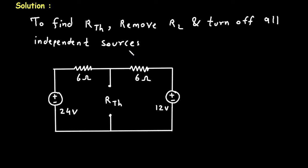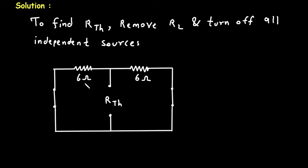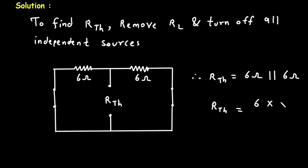Turn off all independent sources. In this circuit there are two independent sources. When we turn off a voltage source, we replace it by a short circuit. So we replace both voltage sources by short circuits. If we stretch the two terminals, this 6 Ohm and this 6 Ohm are connected in parallel. Therefore, RTH = 6 Ohm parallel with 6 Ohm = (6×6)/(6+6) = 3 Ohm.